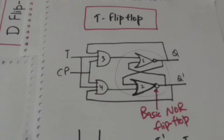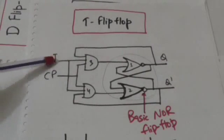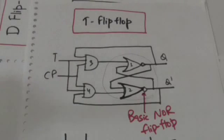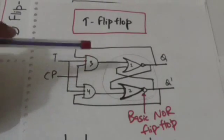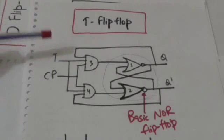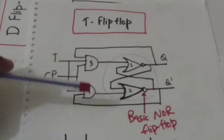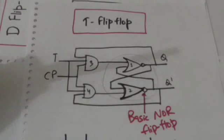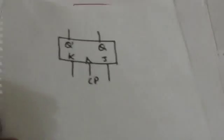The value of Q is the state of this flip-flop. The T flip-flop is a single input version of the JK flip-flop. It is obtained from the JK flip-flop by connecting the single input T to both AND gates of the JK flip-flop.